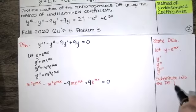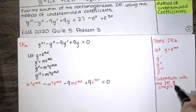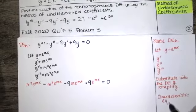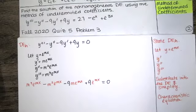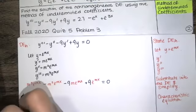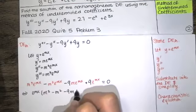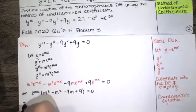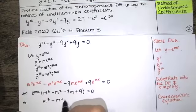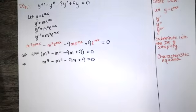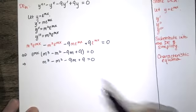After substituting into the differential equation, you want to simplify. That gives you the characteristic equation for the corresponding homogeneous differential equation. We solve that characteristic equation for the values of m. We factor out e to the mx — since an exponential function is never zero, the polynomial must be zero. That's our characteristic equation, and since it's a third degree polynomial, we're expecting three roots.